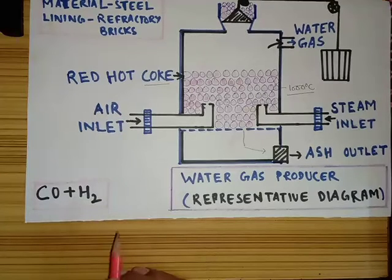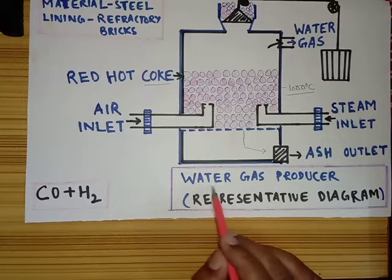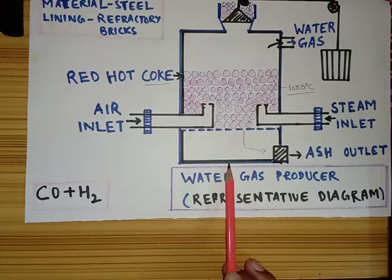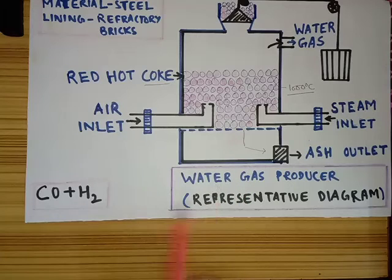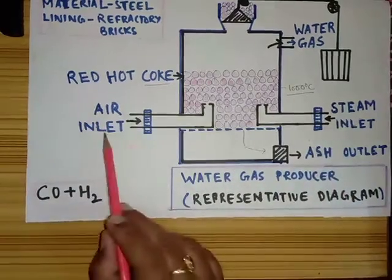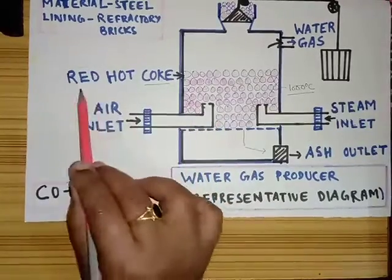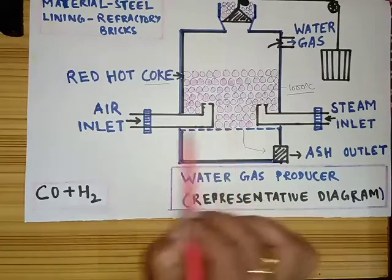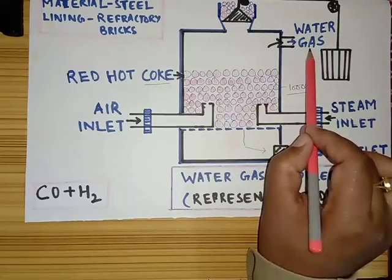As far as the synthesis of water gas is concerned, it is synthesized in the water gas producer. The representative diagram of the water gas producer has been drawn here. Generally, water gas is produced by passing steam and air at alternate intervals through a burning bed of red hot coke. This is the bed of red hot coke where air and steam are sent at alternate intervals for the generation of water gas.